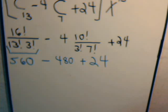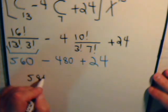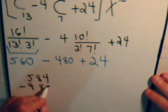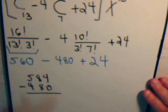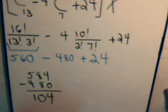Plus 24. So let's see what we have. We have 584 minus 480. That is 104.